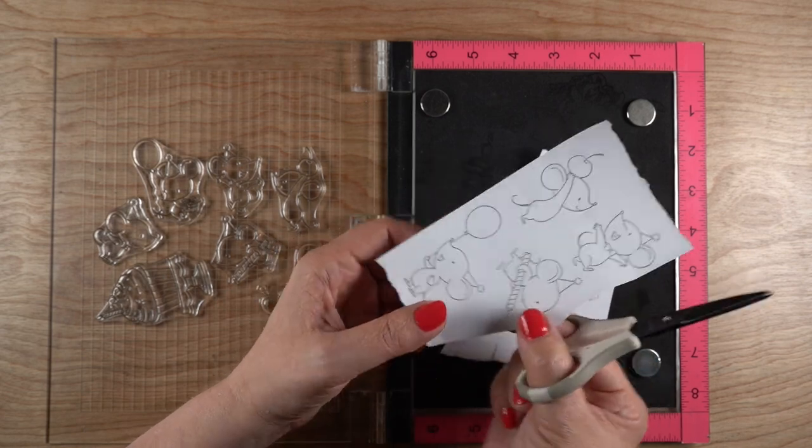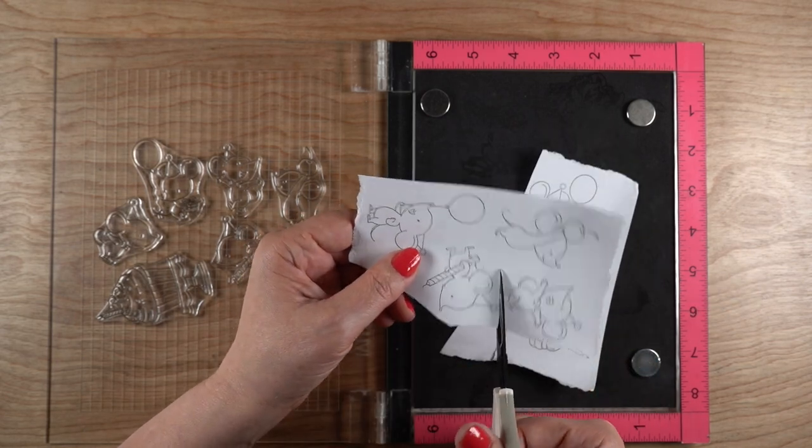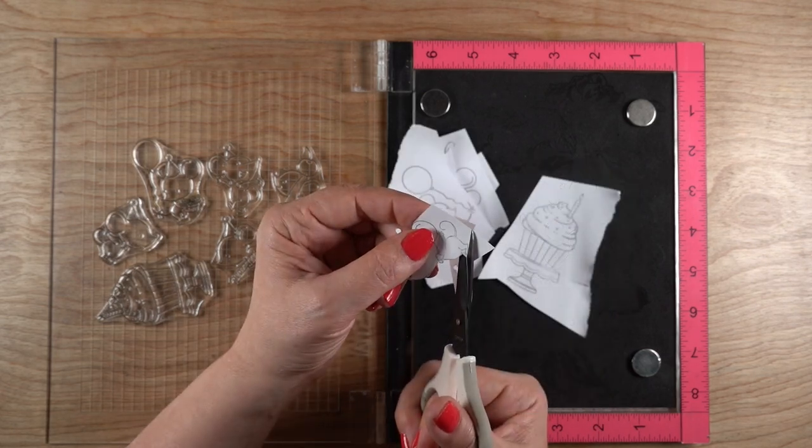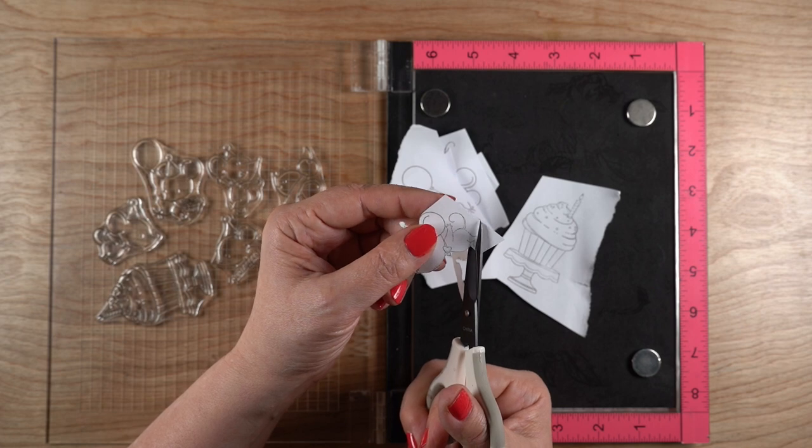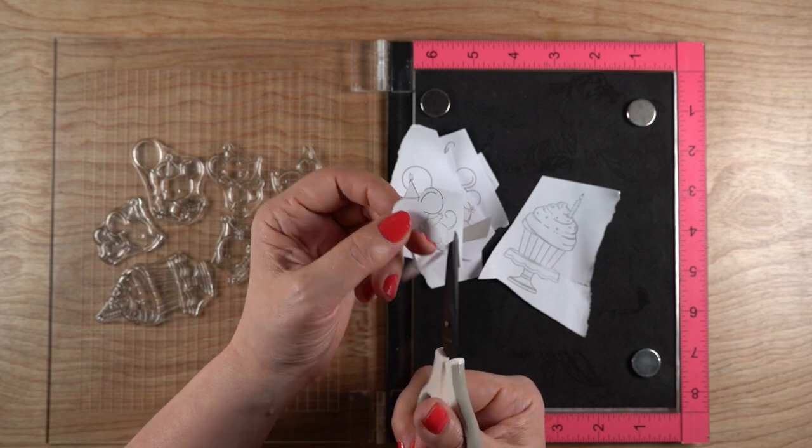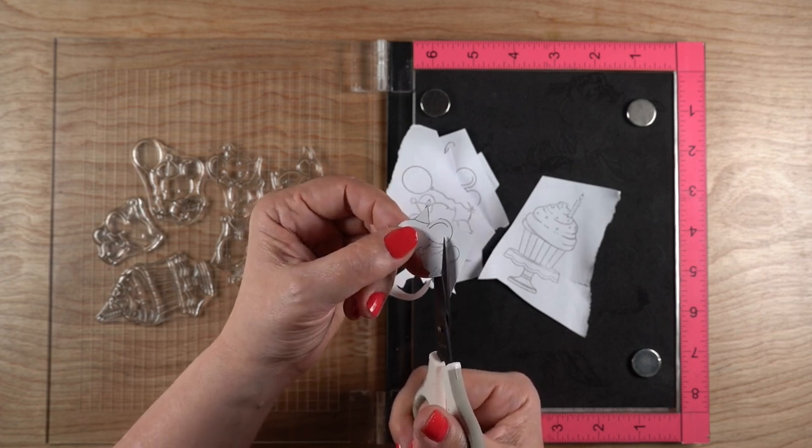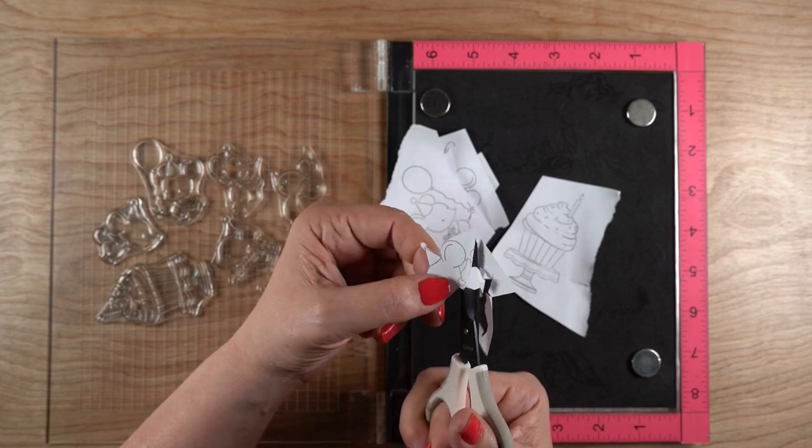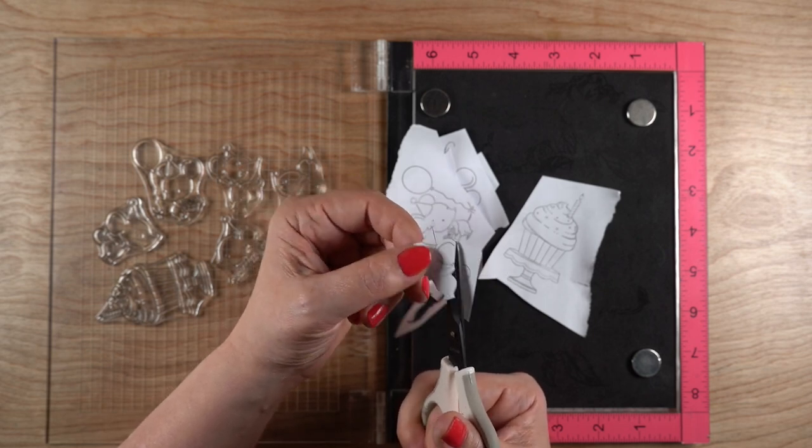I chop them up into smaller pieces because it makes the fussy cutting easier. I find that I do best if I leave the scissors kind of in the same orientation and move the paper to meet up with it. I also don't worry about being perfect in the fussy cutting.